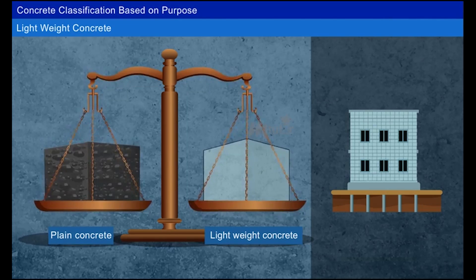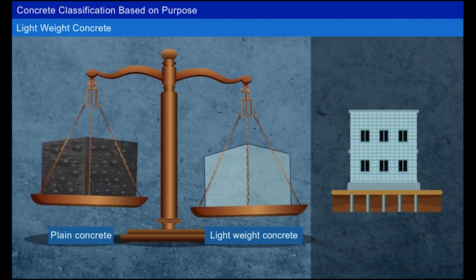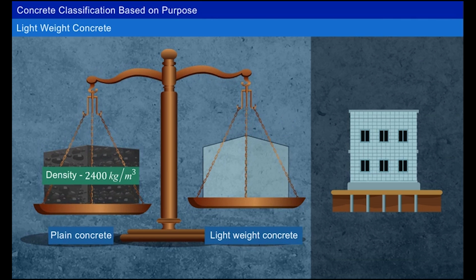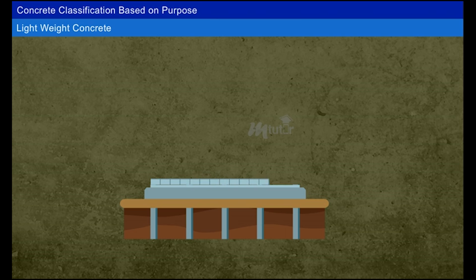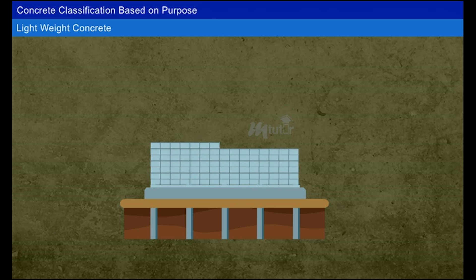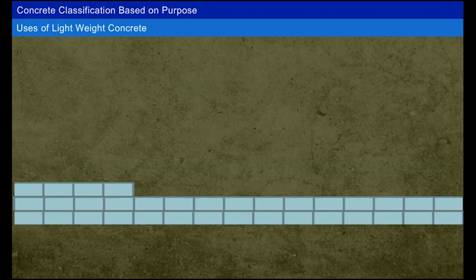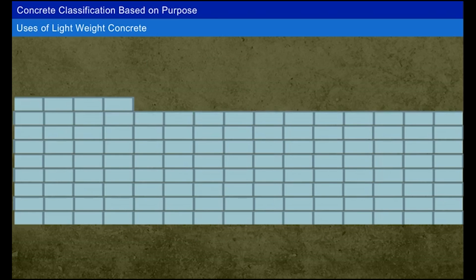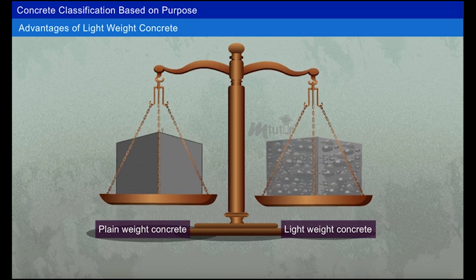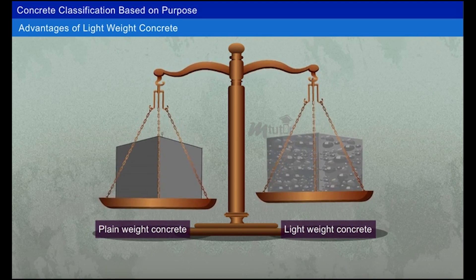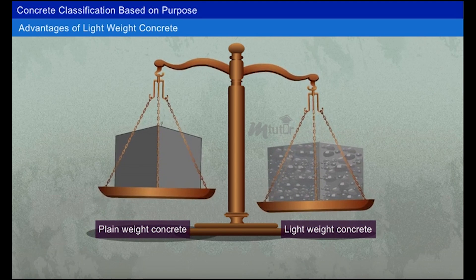One major disadvantage of normal concrete is its high self-weight, with a density around 2400 kilograms per cubic meter, causing heavy overall structure weight. To avoid this, lightweight aggregates are used, so the density varies from 1440 to 1840 kilograms per cubic meter. Lightweight concrete is used for making precast structural units and partition walls.